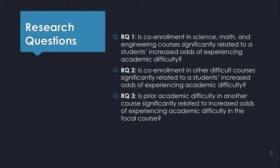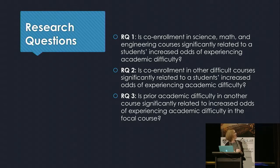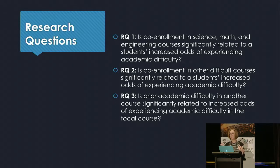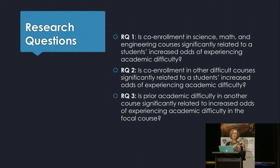We had three research questions. Basically we want to know about co-enrollment: does being co-enrolled in some classes increase students' odds of experiencing academic difficulty? Is there something about difficult classes that makes it harder to do well in all of them? And if you're getting into trouble in one course, does it leak over into your other courses?